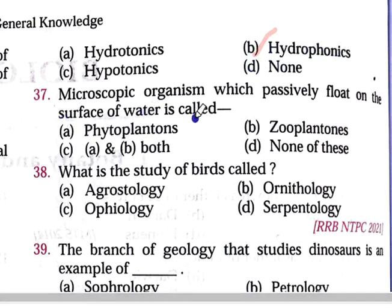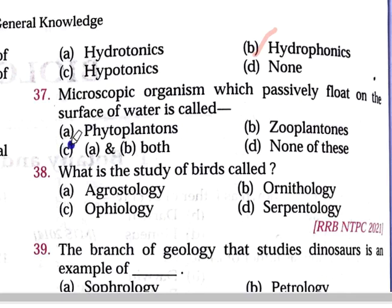Question number 37: Microscopic organisms which passively float on the surface of water are called — option A phytoplankton, option B zooplankton, option C both A and B are correct, option D none of these. Option C is correct. Phytoplankton are microscopic plant-like organisms, and zooplankton are microscopic animal organisms. Both float on water, so both A and B are correct.